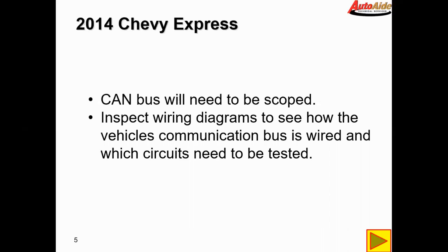After seeing all the codes and the loss of communication with the scan tool while shifting, we determined that we had to scope the CAN bus to have a look at the signature and see what it looks like. Next we decided to inspect the wiring diagram to see exactly how the vehicle communicates on the bus, how it's wired, and what circuits need to be tested.